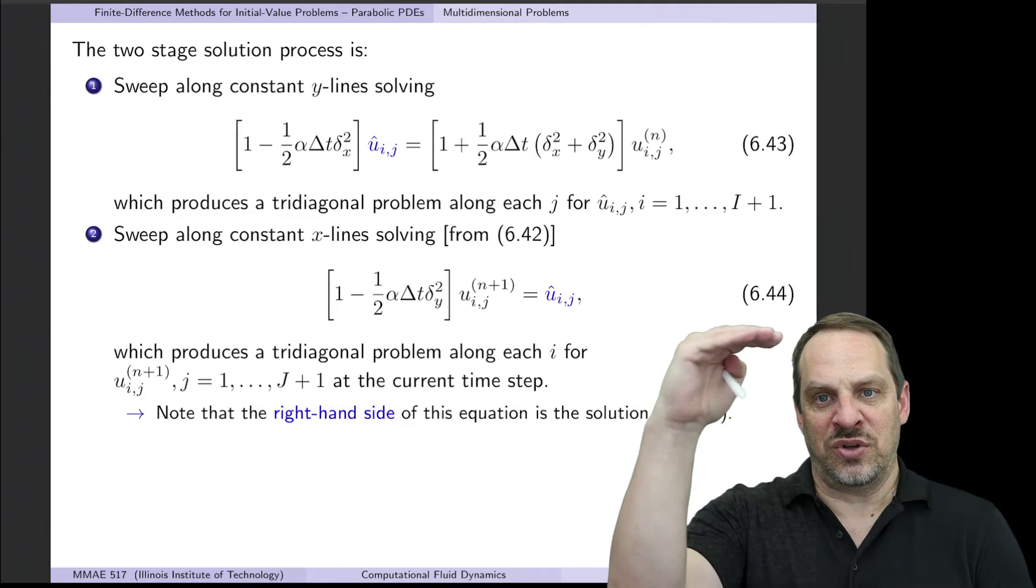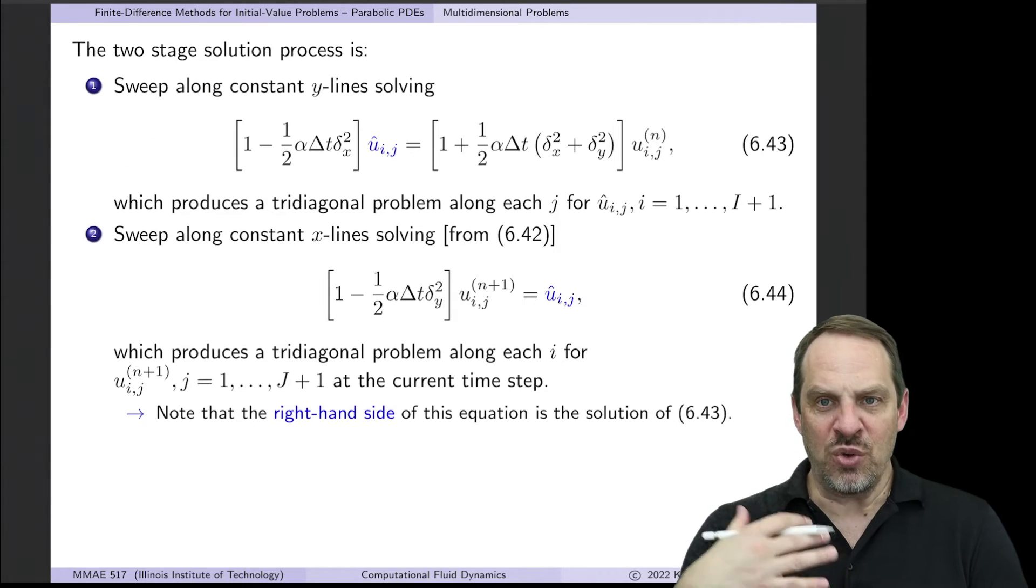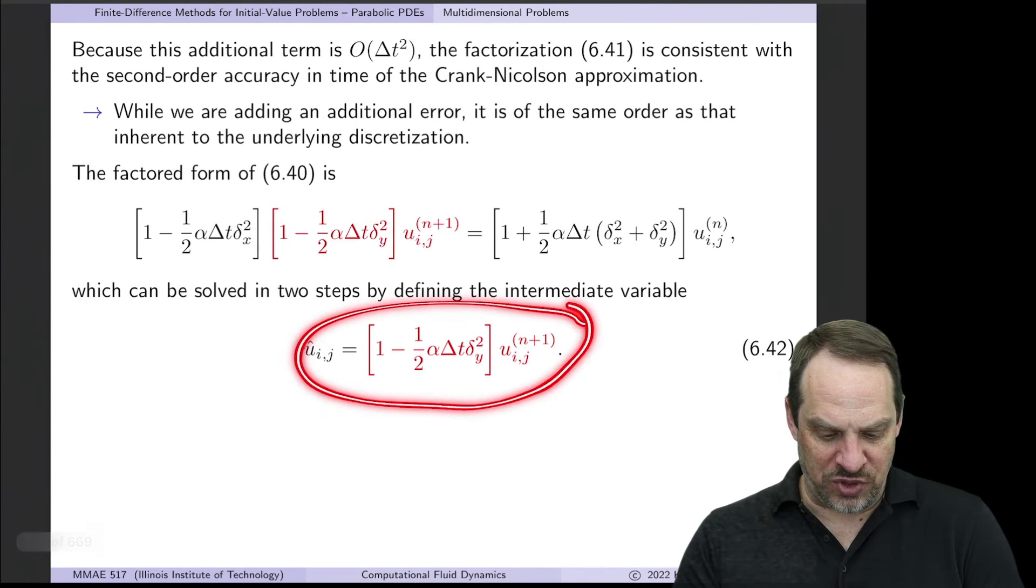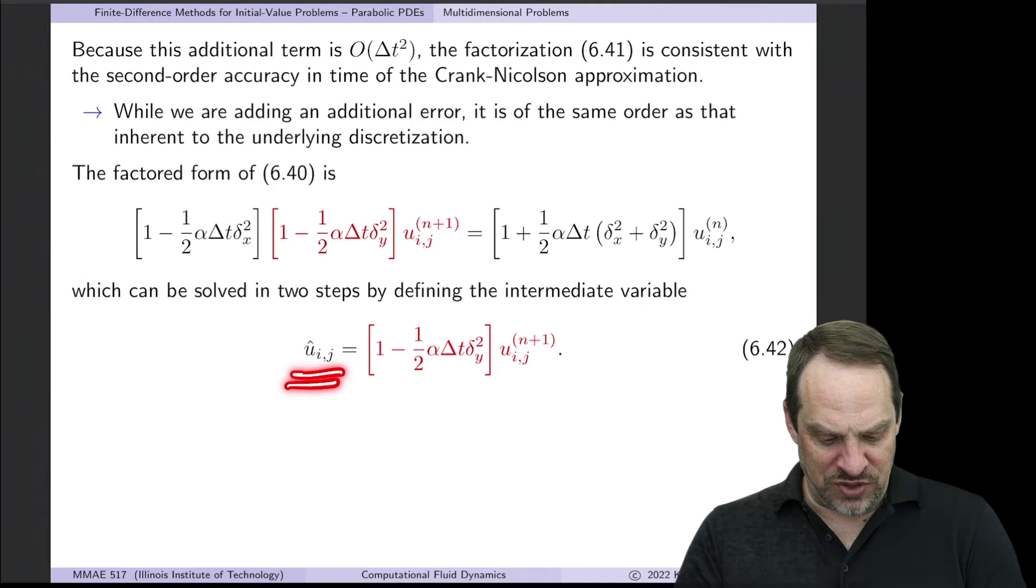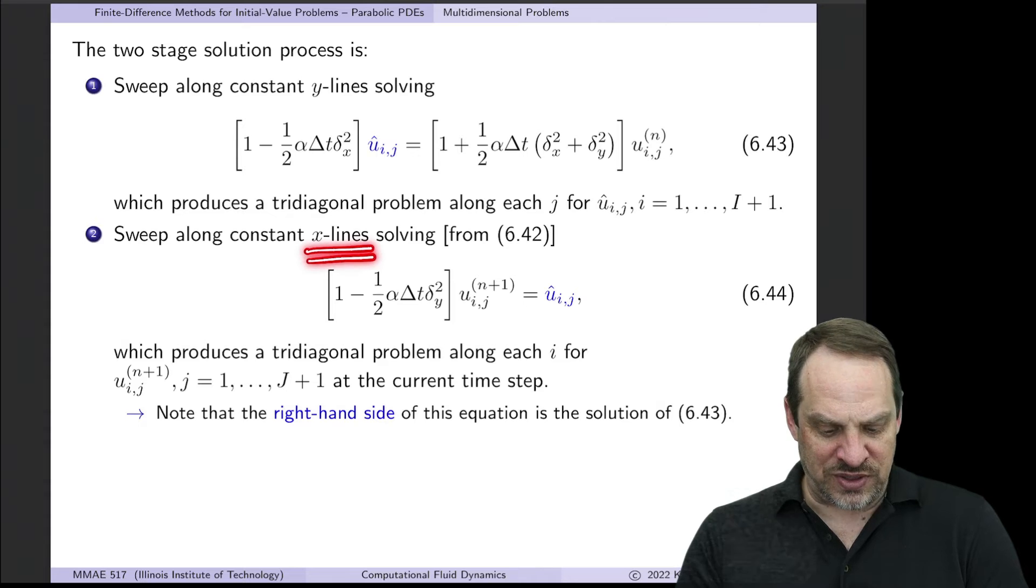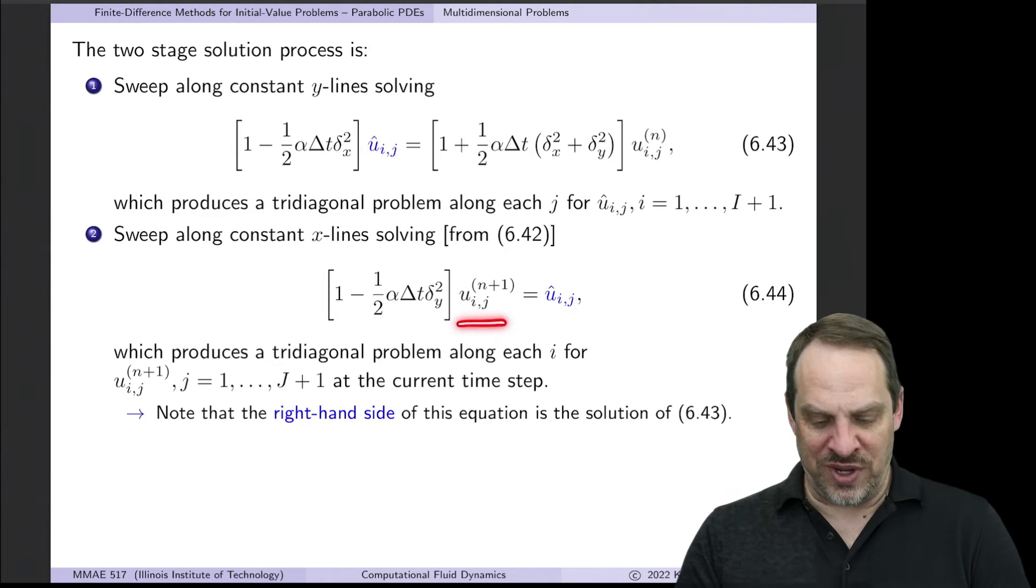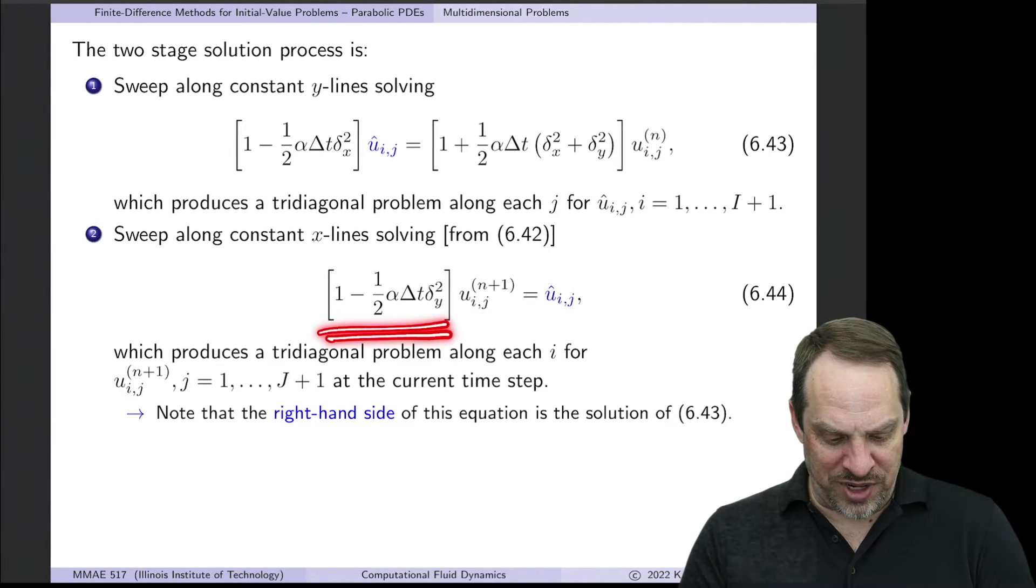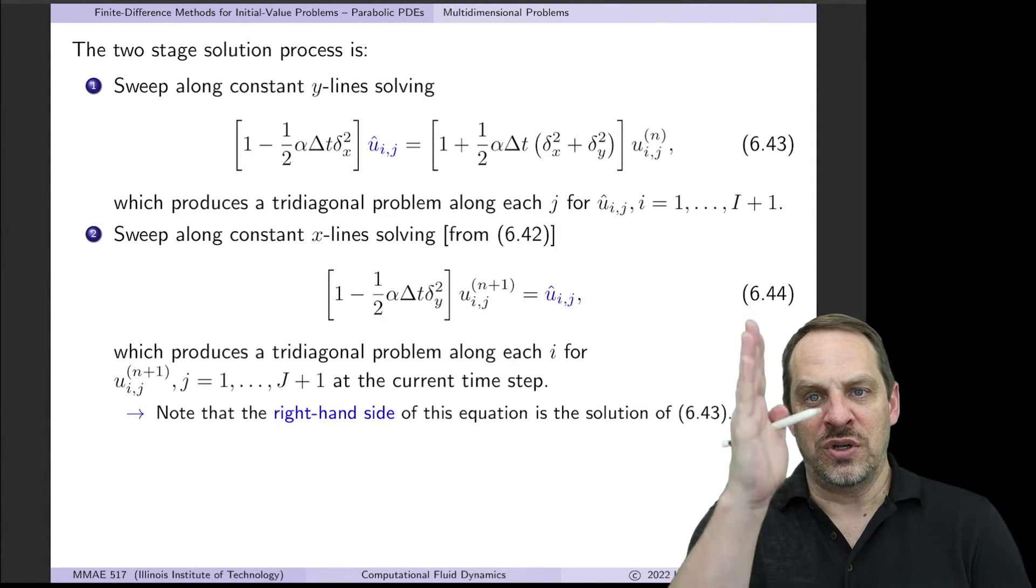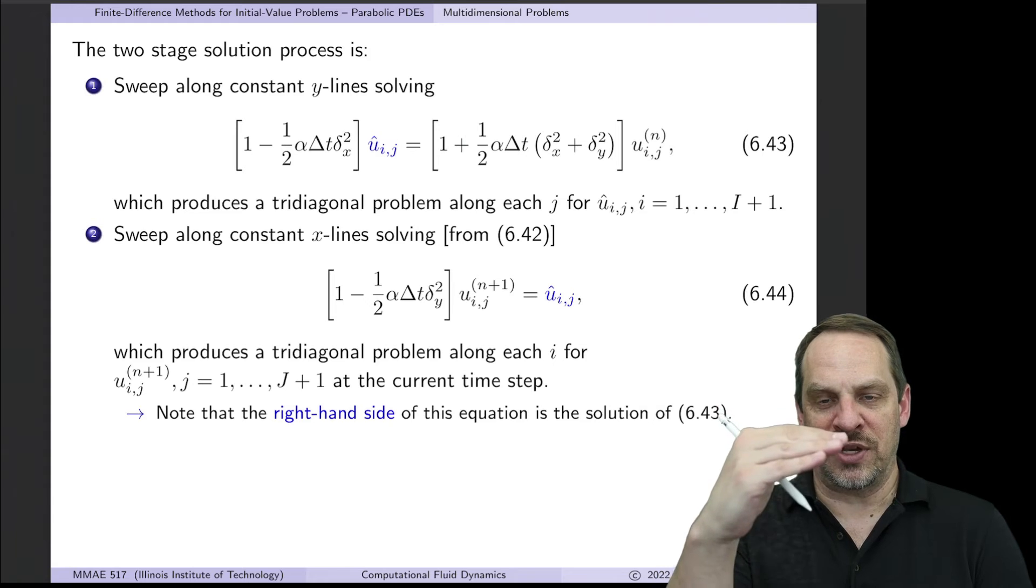Once again, a whole bunch of Thomas calls to solve each of those tridiagonal problems that are represented by 643. Once you have all those solutions for u_ij hat, then we look at this expression 642, flip it around, because now this is known, and this is unknown. And we solve those along constant x lines. So the u_ij hat is now known from step one, and I'm now solving for u_ij^(n+1), where now the operator is only in the y direction. So now we have a whole bunch of tridiagonal solves, all in the y direction, to get the solution for u_ij^(n+1) at that next time level.